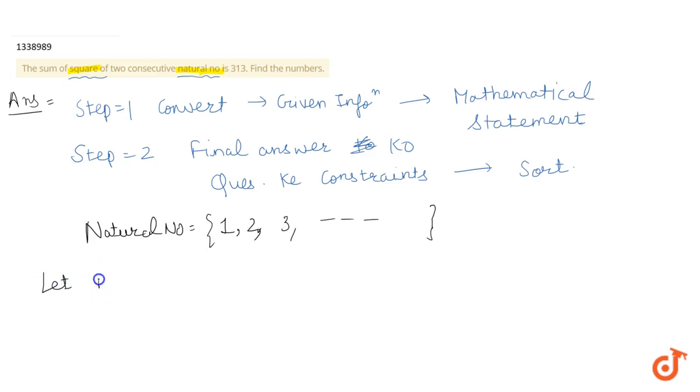Let the natural number be x. So the given is x² + (x+1)² = 313.